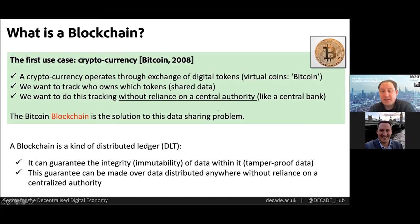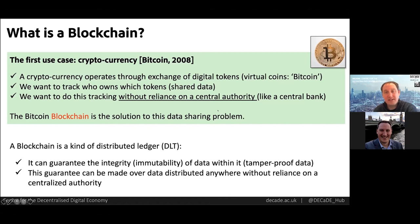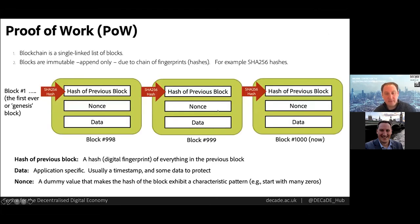Blockchain exhibits these two core properties of DLT. One, it can guarantee the integrity — in other words, the immutability — of shared data across independent non-trusted parties. But two, it can also do so without reliance on any centralized authority or point of trust. So how can it do this? Let's take a look at how blockchain works at a technical level.